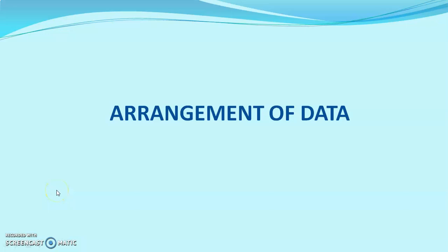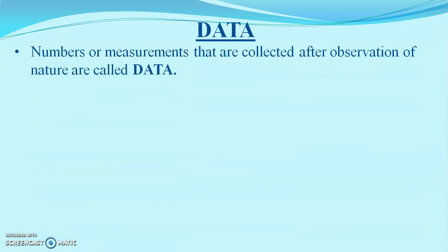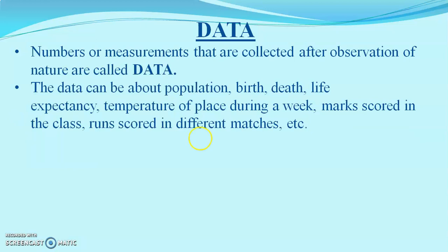Welcome to another session on the introduction to biostatistics. We have discussed several terminologies in previous classes. Today we will discuss some other terminologies associated with the arrangement of data. Data are numbers or measurements collected from an experiment or observation. Examples of data include population, birth, death, life expenses, temperature of a place during a week, or marks or runs in mathematics.